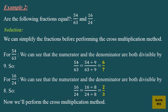Example 2. Are the following fractions equal: 54 over 63 and 16 over 24? Solution. We can simplify the fractions before performing the cross multiplication method. For 54 over 63, the numerator and denominator are both divisible by 9. So, 54 over 63 equals 54 divided by 9, over 63 divided by 9, which equals 6 over 7.